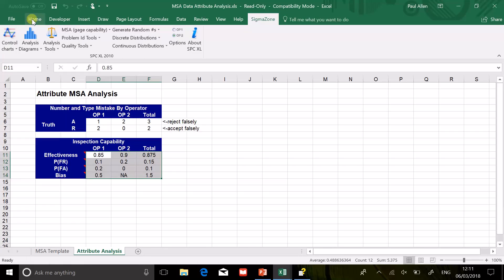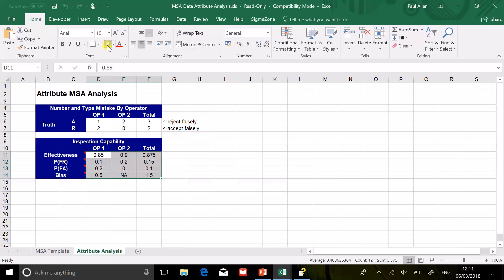Here we are in this zone here. There's the statistics - we've got the four statistics for operator one, the four statistics for operator two, and the overall results. Overall we've got a good measurement system, 88.75% for effectiveness. Operator two is much better than operator one.